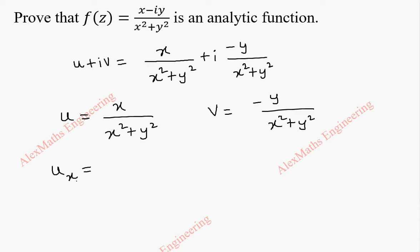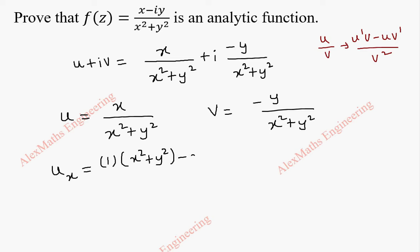Now let's find ux — the partial derivative with respect to x, treating y as a constant. We apply the quotient rule. For a u/v form, the derivative is (u'v - uv') / v². So u' is 1, v is (x² + y²), and v' is 2x since y is treated as a constant. The denominator becomes (x² + y²)².